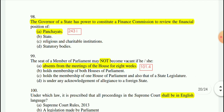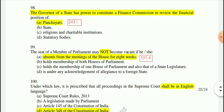Question 99: The seat of a Member of Parliament may not become vacated if absent from the meetings of the house for 60 days — not 8 weeks as stated incorrectly. You can read Article 101, Clause 4.